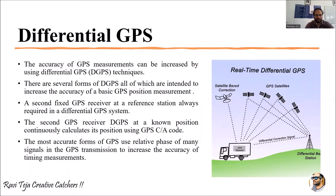Welcome to the course on satellite communications. In today's class we are going to learn about Differential GPS, also called DGPS. The concept of DGPS involves a secondary GPS receiver located on the earth at a fixed position. We use DGPS because the accuracy of GPS measurements can be increased using this system.